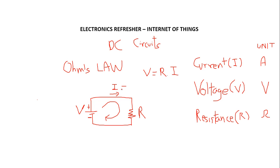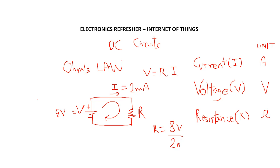So this is Ohm's Law, and I am going to give you some examples. For example, if you have a current equal to 2 milliamps and you have a battery of 8 volts, what is the value of the resistor? According to Ohm's Law, the value of the resistor is going to be 8 volts divided by 2 milliamps, which equals 4k ohms.